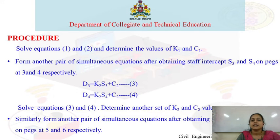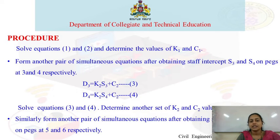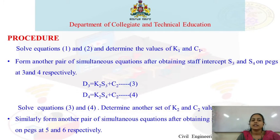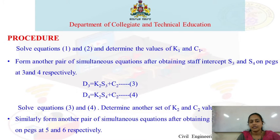For the second set of observations, consider D3, D4, S3, S4 values and substitute them to form simultaneous equations 3 and 4. Solve these to get K2 and C2. Similarly, form another pair of simultaneous equations.